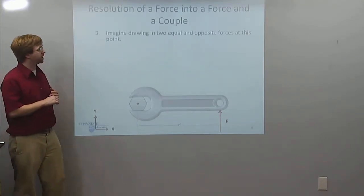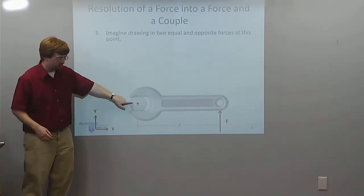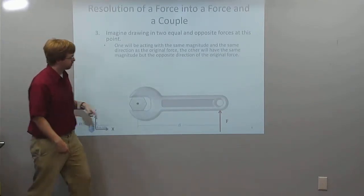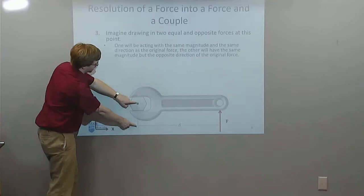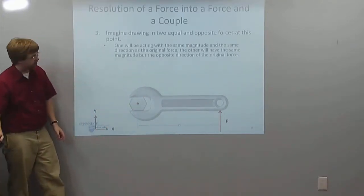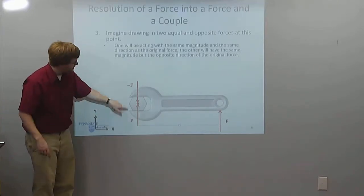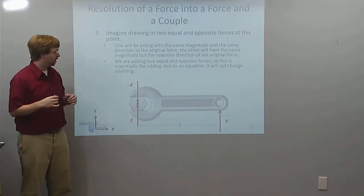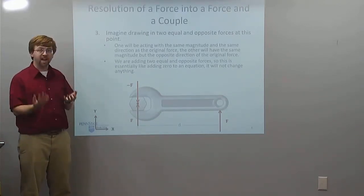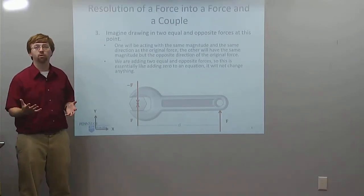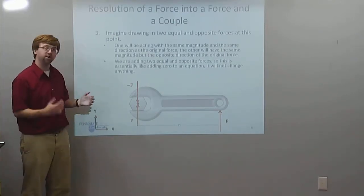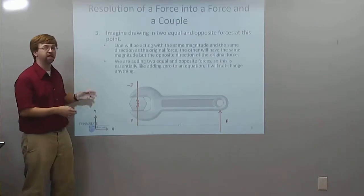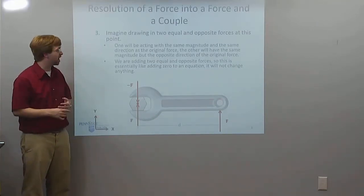The next step is to imagine drawing in two equal and opposite forces at this point. One force is going to have the same magnitude and direction as the original force — basically I take the original force and bring it over here — and one is going to be directly opposite. So there are my two forces: F and negative F. Since I've added two equal and opposite forces acting at the same point, this is like adding zero to an equation. It doesn't change anything, but I've gone from one force to three.